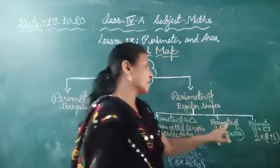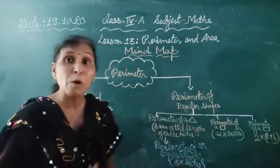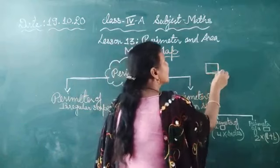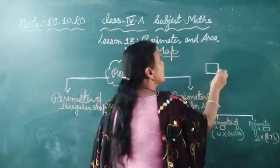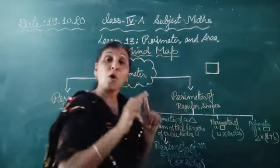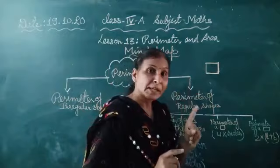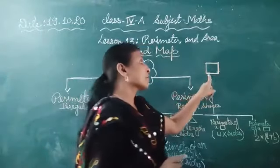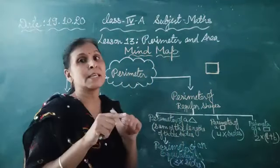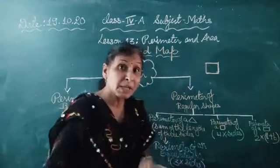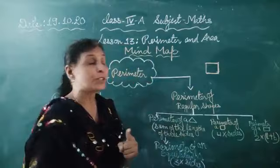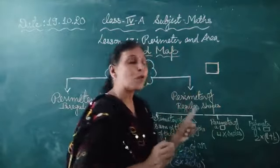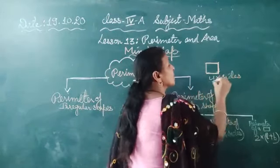Now comes the perimeter of a square. You know about the square — in a square, all four sides are equal. Square mein 4 sides hoti hain aur chaaro sides equal hoti hain. So how will we find out the perimeter of a square? We use this formula: 4 multiplied by side. Suppose one side is 3 centimeters, then 4 multiplied by 3 cm — that is 12 centimeters is your answer.